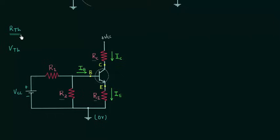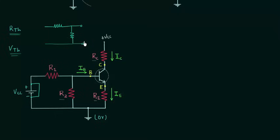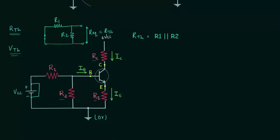First I will calculate the Thevenin's resistance, then the Thevenin's voltage. In order to calculate the Thevenin's resistance, we need to short circuit all voltage sources — we only have one, so we short circuit Vcc — and then open circuit the load. Once we do these two things, we have resistance R1 connected in parallel with resistance R2. So RTH is equal to R1 parallel R2, or R1 multiplied by R2 divided by R1 plus R2. This is the value of Thevenin's resistance.